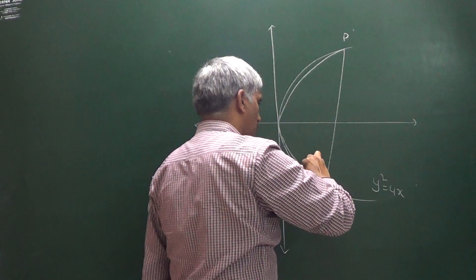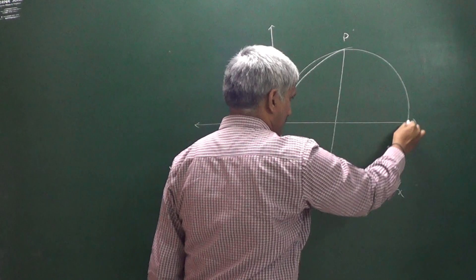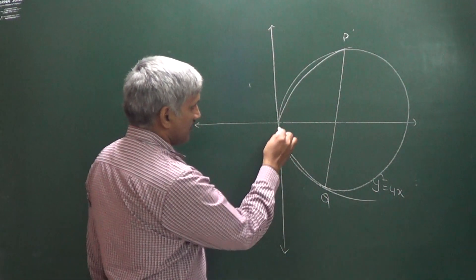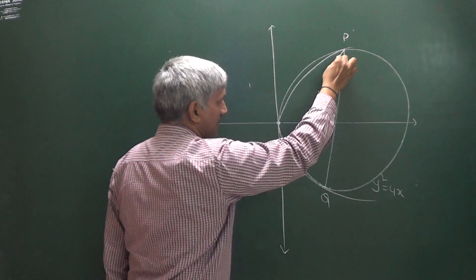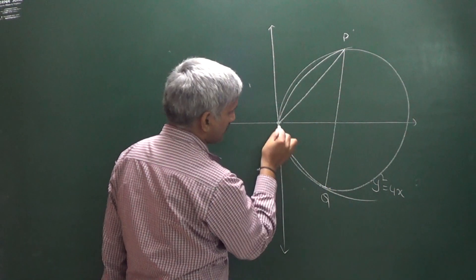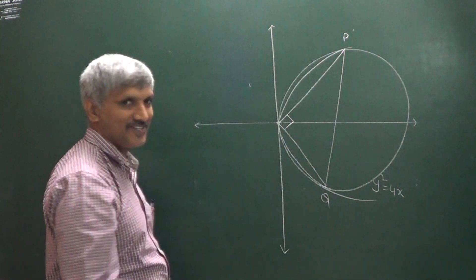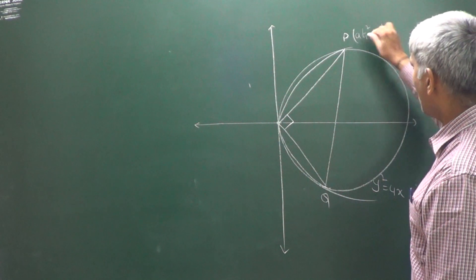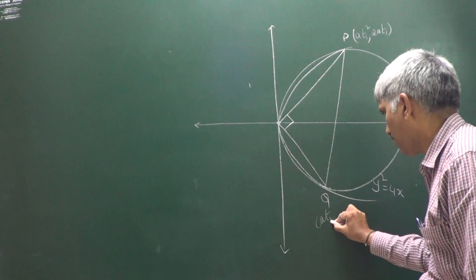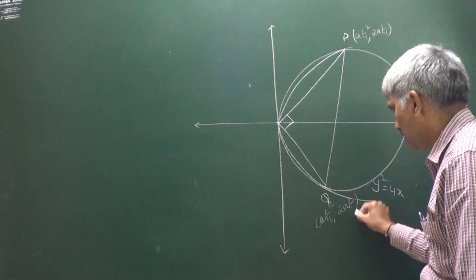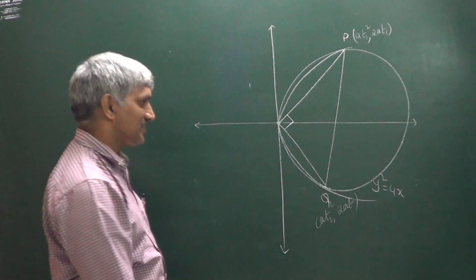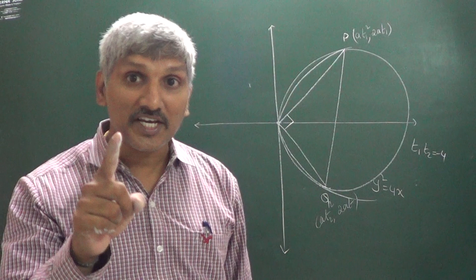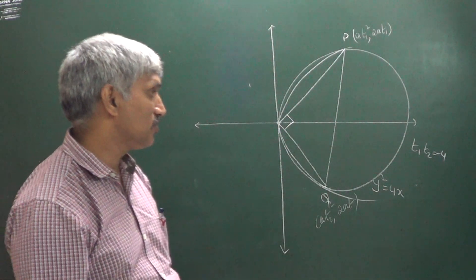The circle with PQ as diameter passes through the vertex. Joining the vertex to P and Q, the angle at the vertex is 90° — because a diameter subtends 90° on the circumference. Point P is (at₁², 2at₁) and Q is (at₂², 2at₂). Since the chord subtends 90° at the vertex, we have the condition t₁·t₂ = -4.